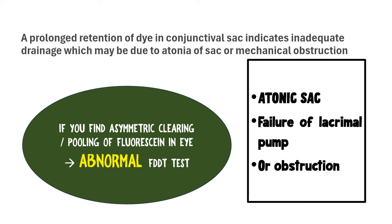Prolonged retention of dye in the conjunctival sac beyond five minutes indicates inadequate drainage — the dye is not entering the puncta, canaliculus, or sac well, and is not draining into the nose. This inadequate drainage might be due to lack of tone in the lacrimal sac, failure of the lacrimal pump, or some obstruction. The FDDT does not identify the exact reason but simply confirms that there is a problem along the lacrimal apparatus.